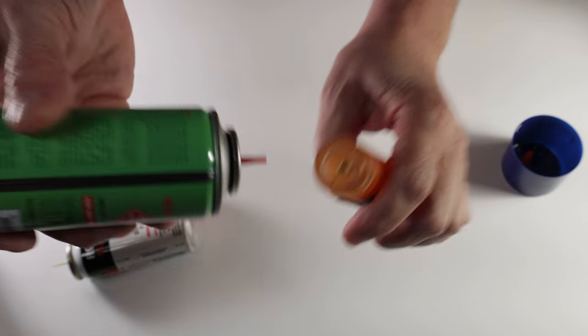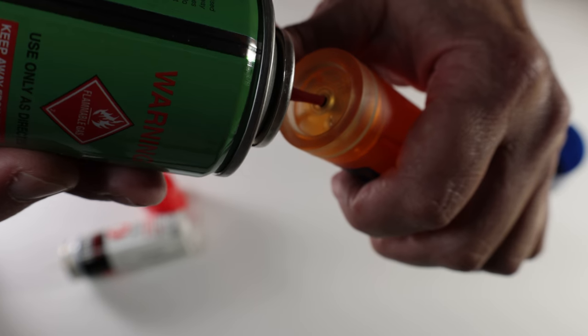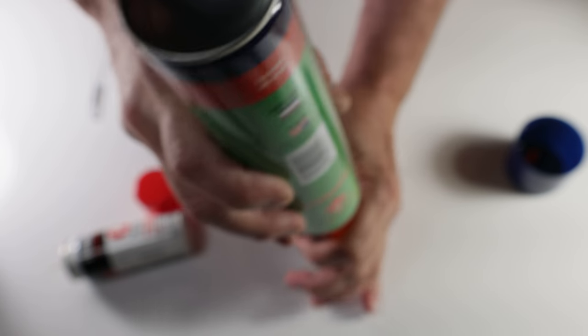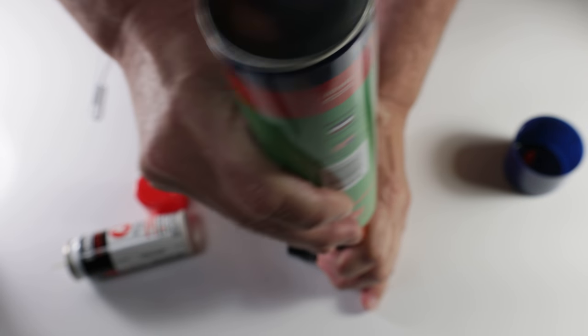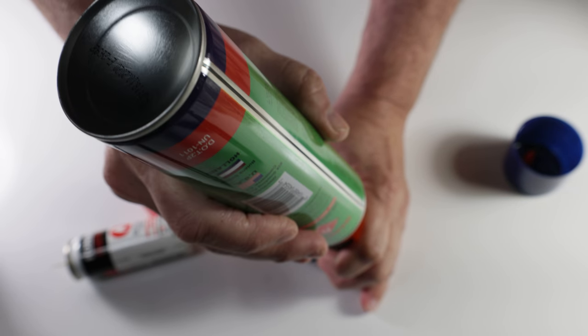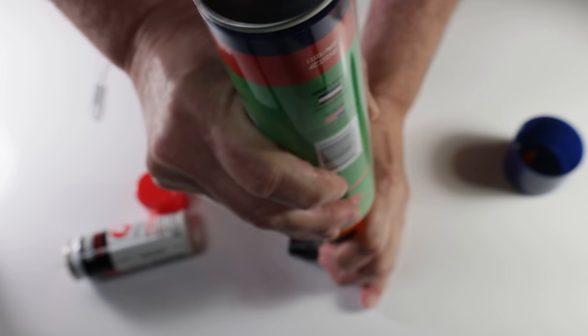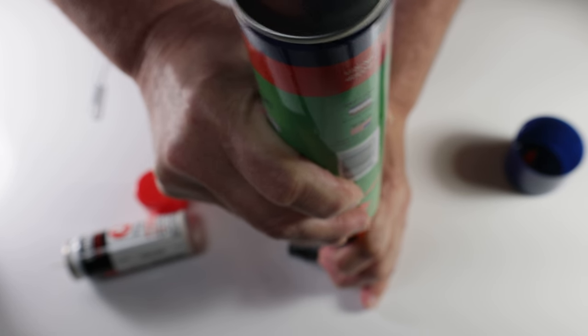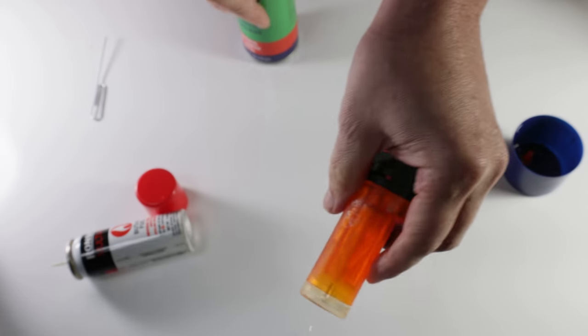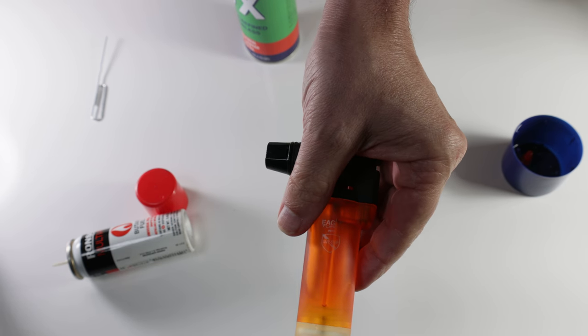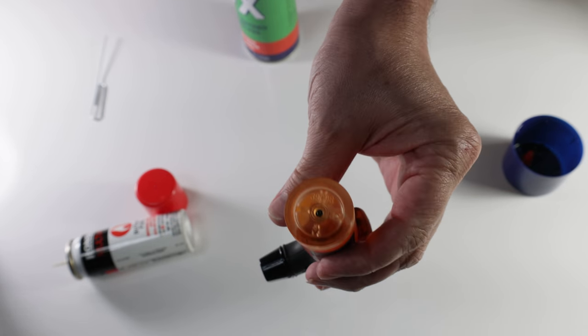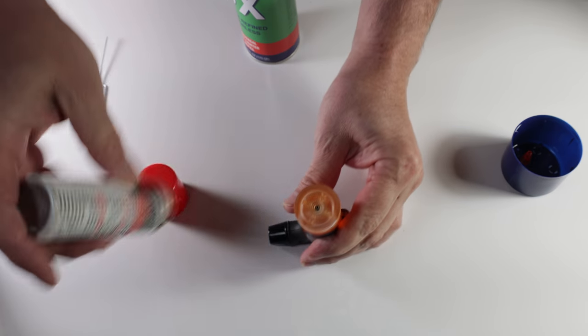All you do is place this on top like so and push down. As you can see, you can see the bubbles in there. Now the tank is full. The Ronson one seems to work a little bit better though.